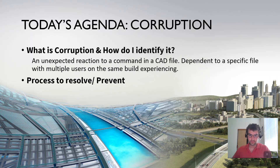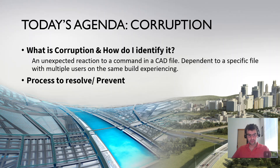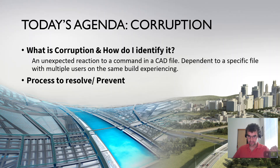What is corruption and how do I identify it? I define corruption as an unexpected reaction to a command in a CAD file. For example, something super simple: I'm drawing a polyline and I cannot draw a polyline in this file. I know how to draw a polyline — I've done them in other files. That is a drawing corruption, file-specific issue.